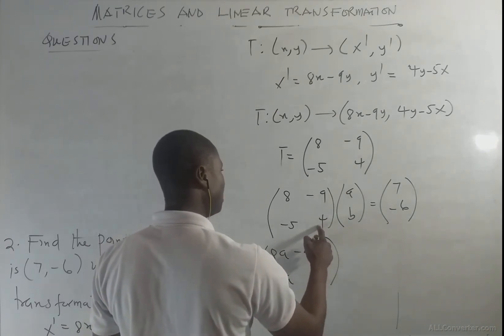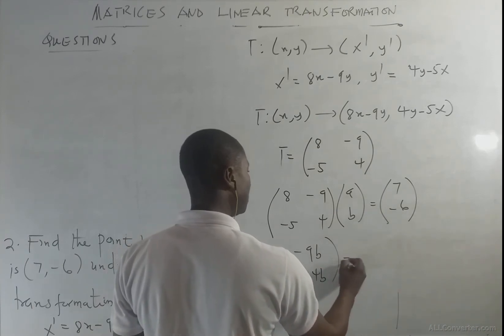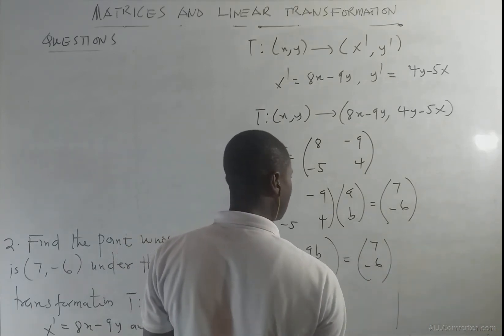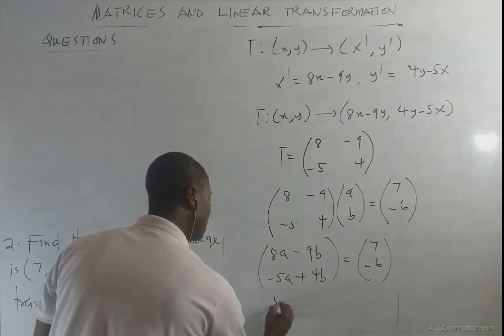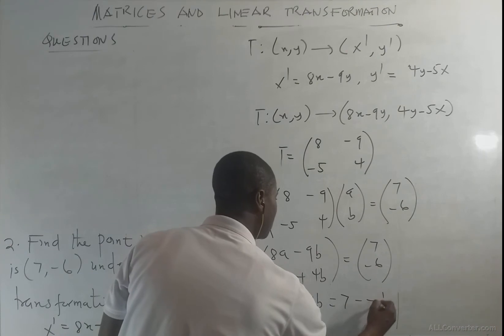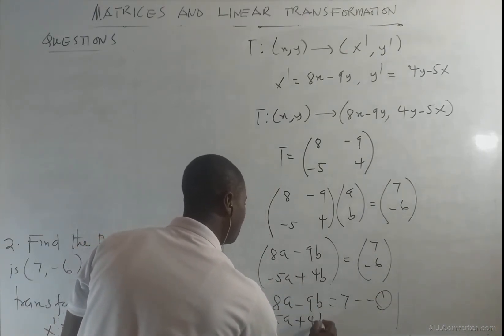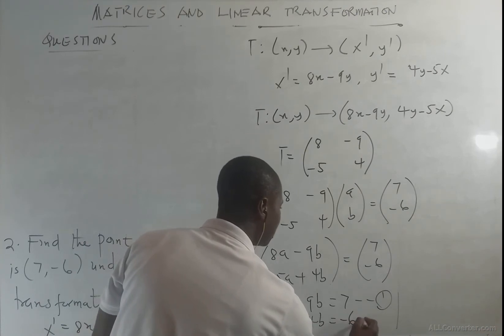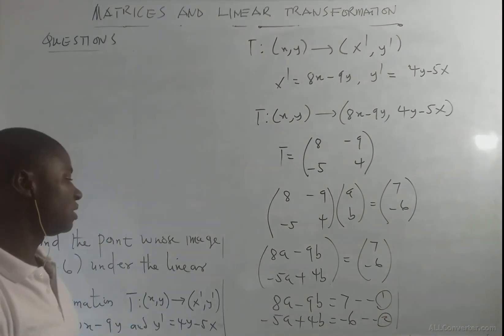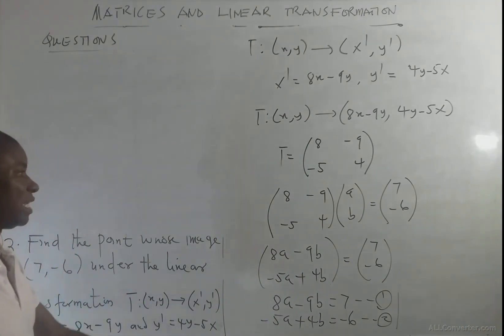Working out the multiplication: 8a - 9b = 7 (equation 1), and -5a + 4b = -6 (equation 2). We solve these two equations simultaneously and when we do that the values of a and b will give us our point.